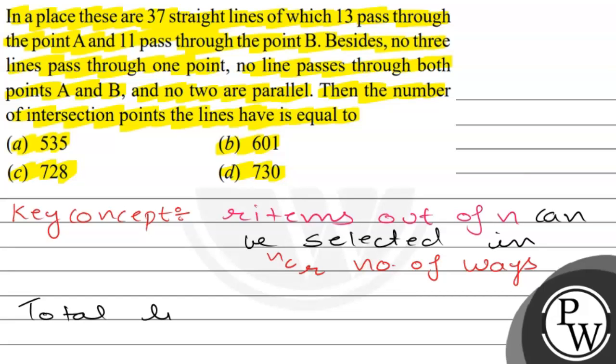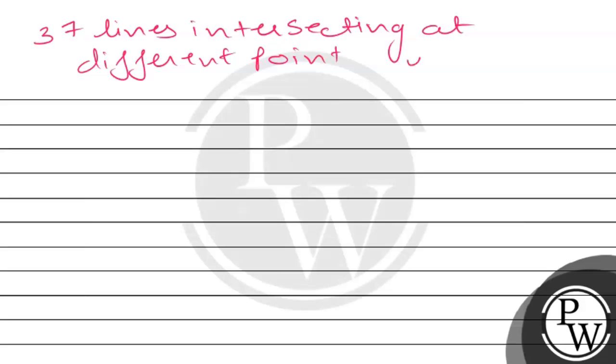The total lines is equal to 37. Now, 37 lines are non-parallel, given that no two lines are parallel. So, 37 lines intersecting at different points. If we take two lines, they intersect at one point. So, this is 37C2.